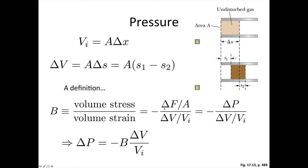Now the volume stress is equal to the change in force over the cross-sectional area. And as we've seen before, a force divided by an area is a pressure, so that's equal to the change in pressure. And the volume strain is equal to the change in volume divided by the initial volume. So we just leave that there. And we've got a minus sign here as well.